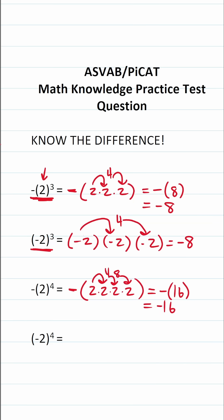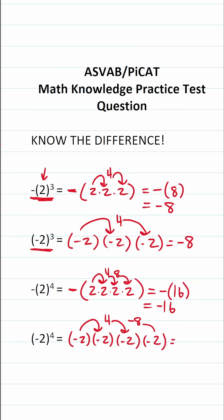Now let's see what happens when we have negative two in parentheses to the fourth power. This is going to be negative two times negative two times negative two times negative two. Negative two times negative two is positive four — a negative times a negative is a positive. Four times negative two — a positive times a negative — is negative eight. And then negative eight times negative two — a negative times a negative — is positive 16.